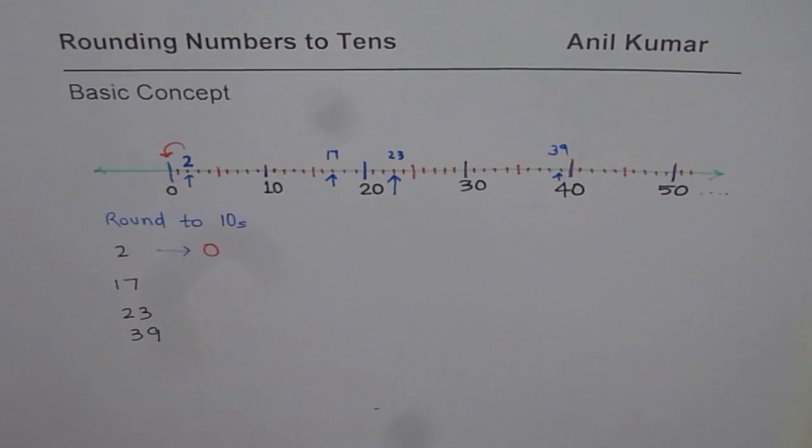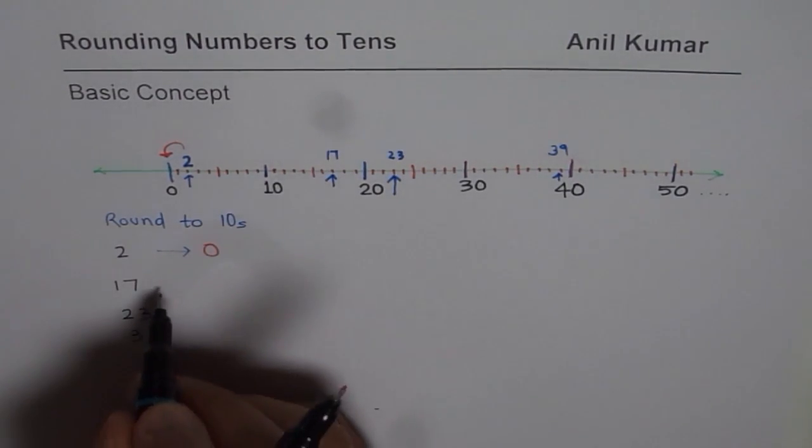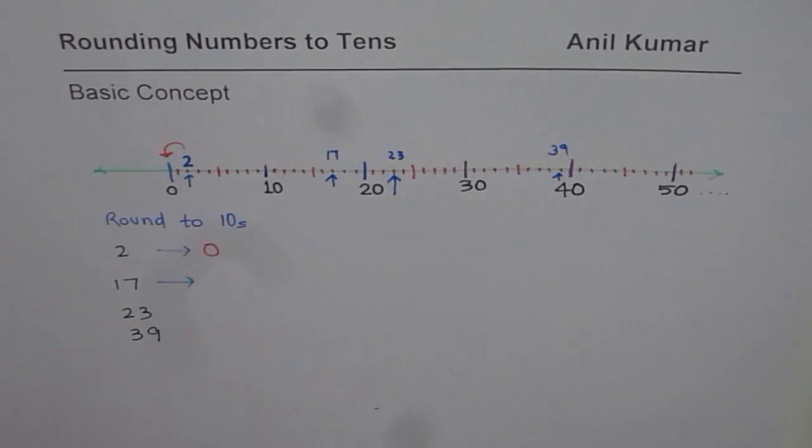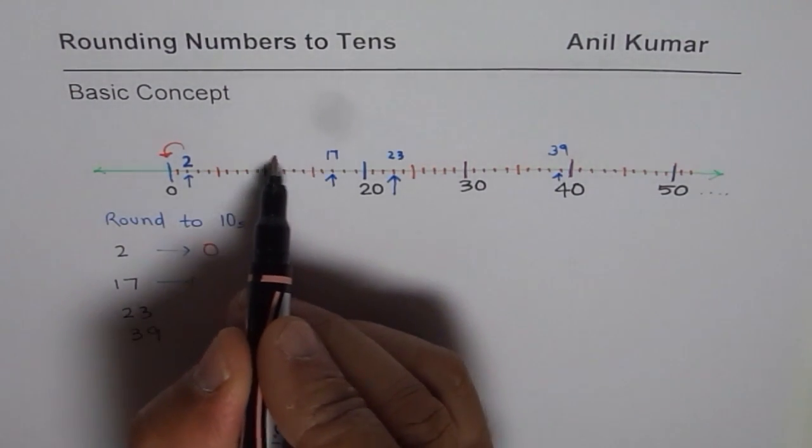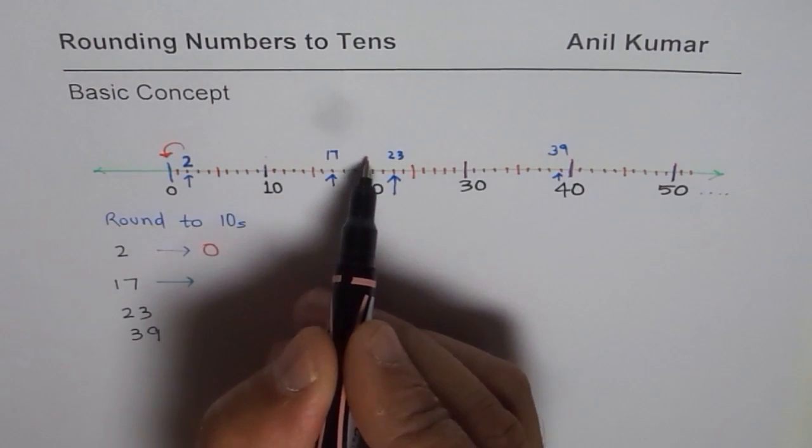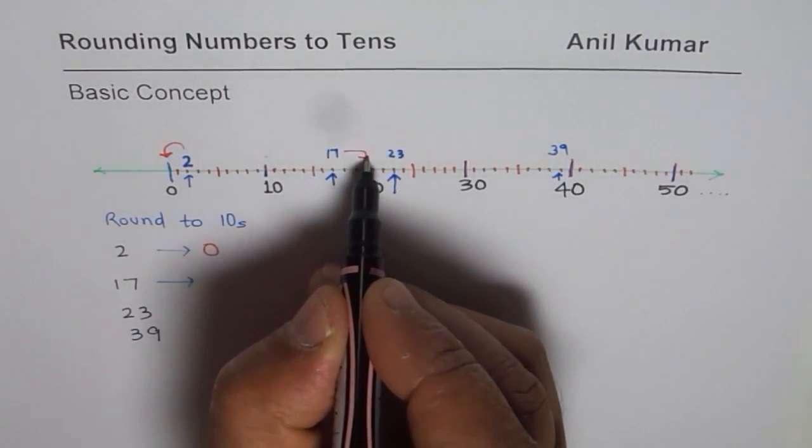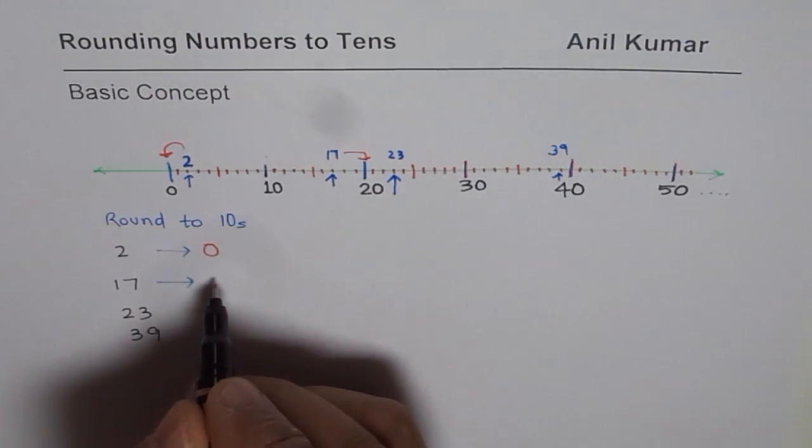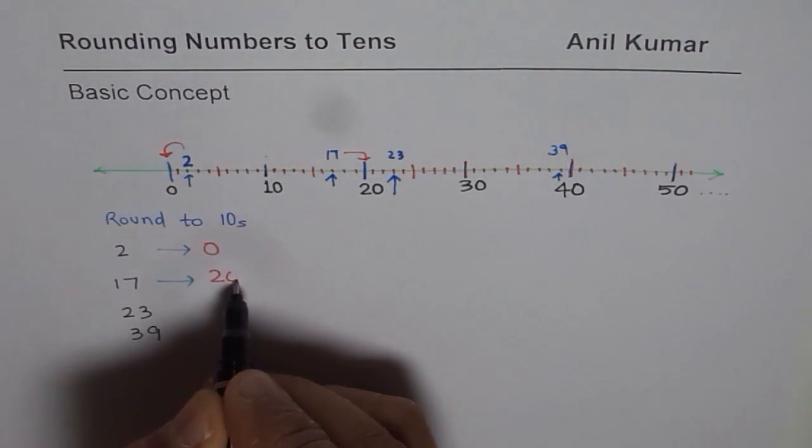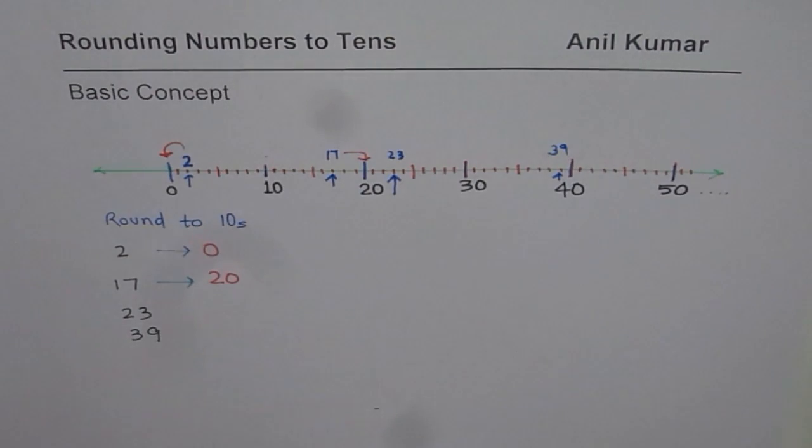Now, how about 17? In case of 17, we see that it is farther away from 10 than 20. It is closer to 20. And therefore, it gets rounded to 20.